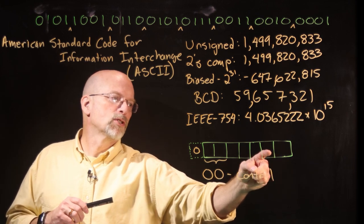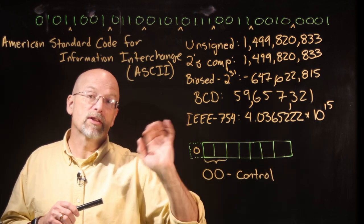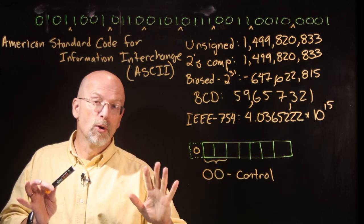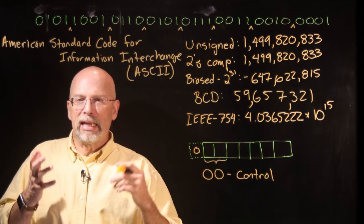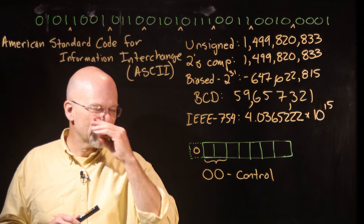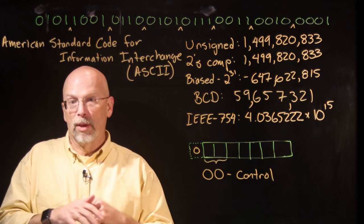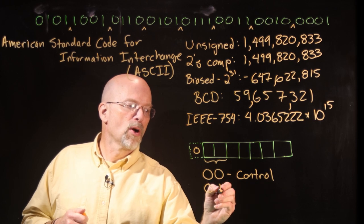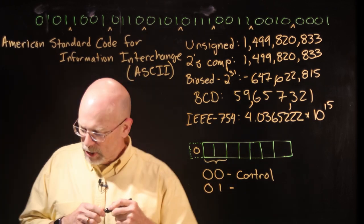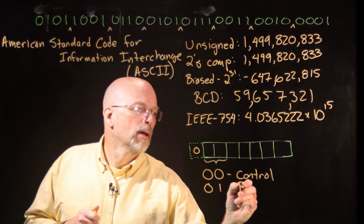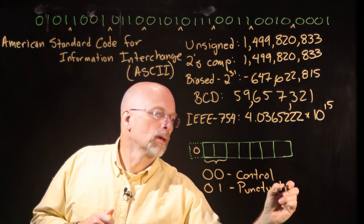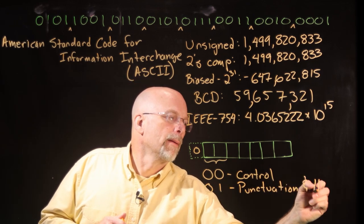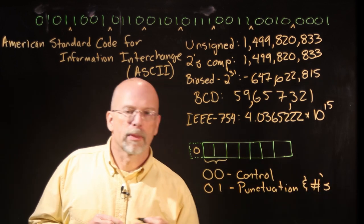So if it started with zero, zero, we had five bits left. That's 32 patterns. So there were 32 patterns that would be part of those that we could use. Now, if it started with a zero, one, this zero, one tended to be punctuation and numbers.